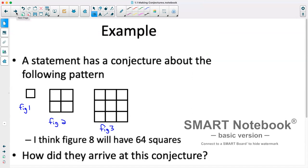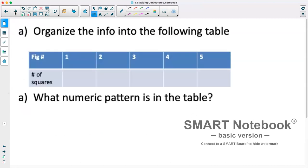So one thing that can be helpful for solving these is putting data in tables. So in the first figure, we only had one small square. In the second figure, we had four small squares. In the third figure, we had nine.